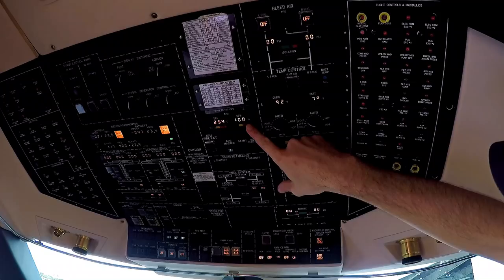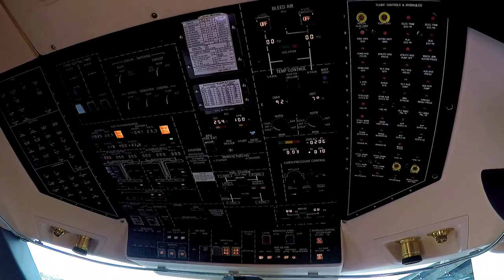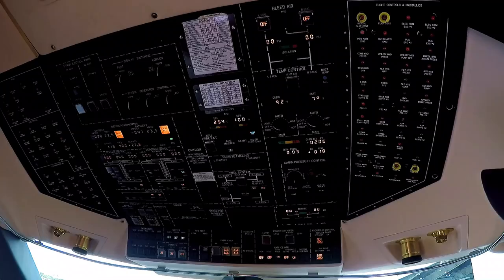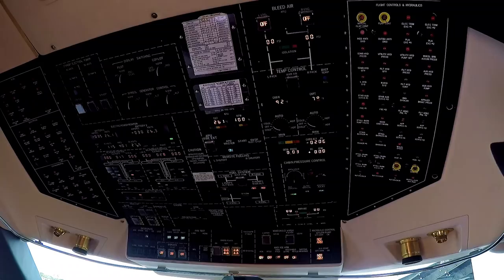Once we have that on, we can turn on the navigation light - that tells anyone outside that we have power on the airplane. And now we can fully start up the electronics, avionics, everything can be fully powered off of the APU at this time.